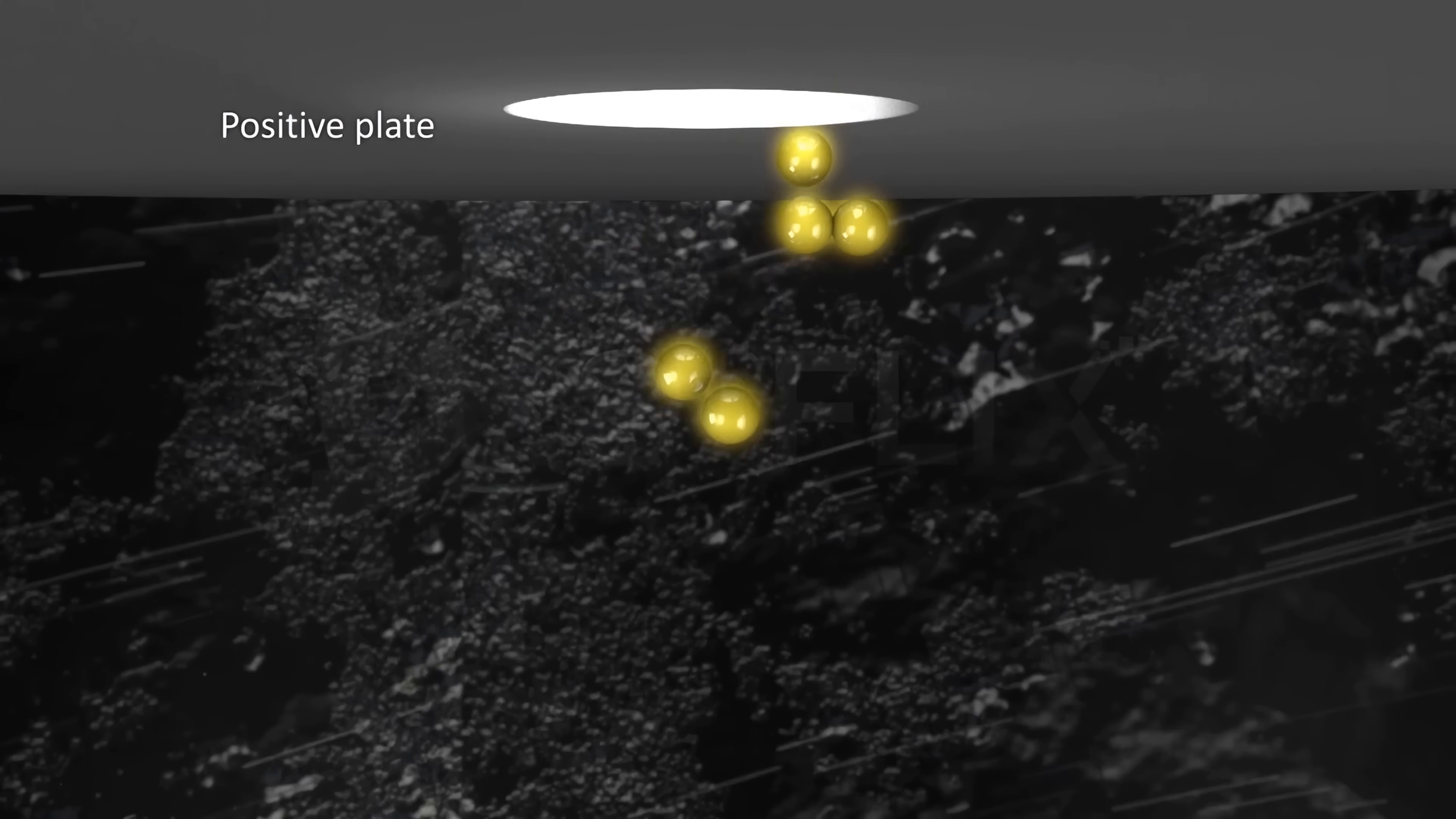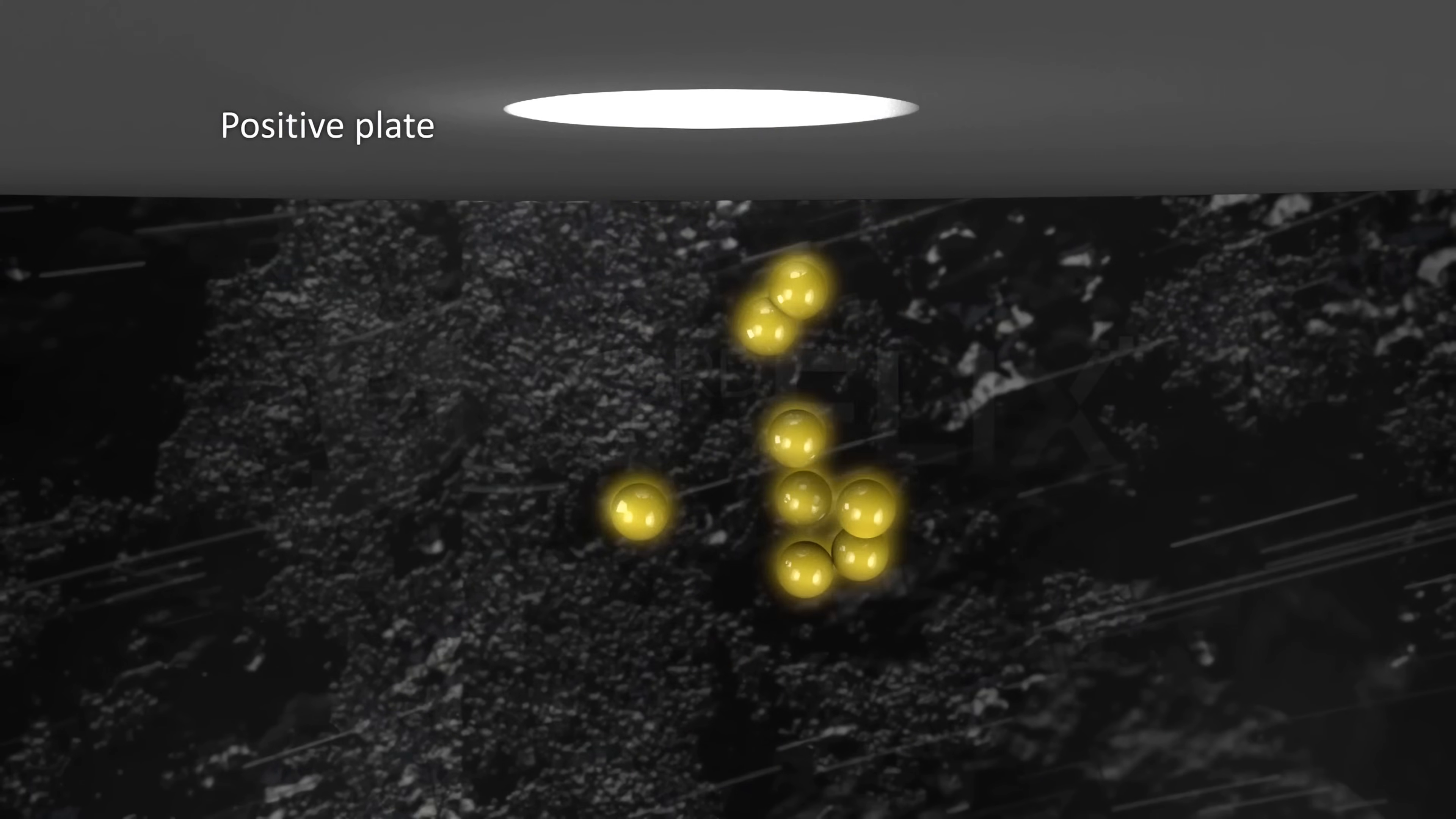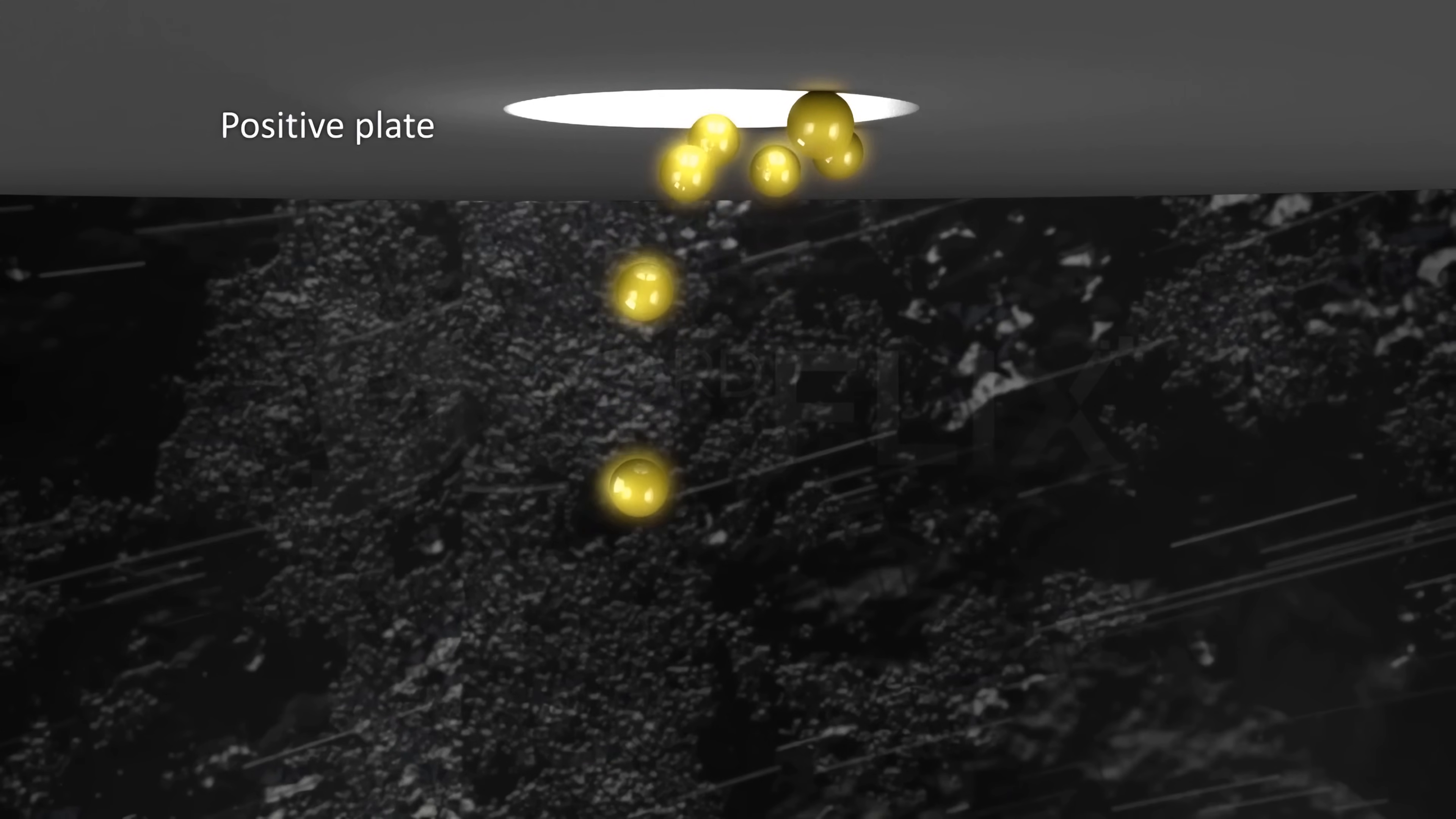Soon after this, a voltage was applied across the plates. This resulted in movement of negatively charged oil droplets against the electrostatic and gravitational forces acting on them towards the plate with positive charge.